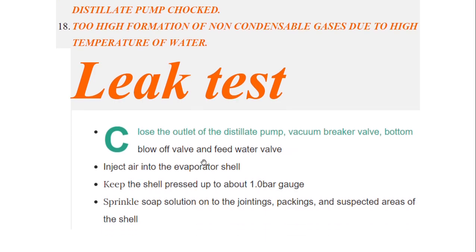Now we have the leak test — that was the major topic I wanted to cover. The leak test is simple. We close the outlet of the distillate pump, the vacuum breaker valve, the bottom blow-off valve, and the feed water valve. We close all these valves because we are taking the leak test and we don't want air to pass through anywhere.